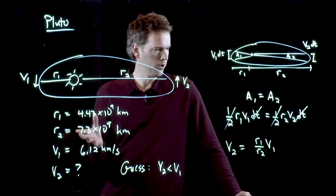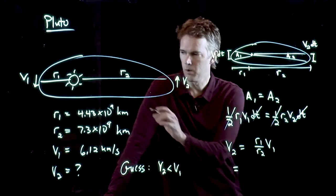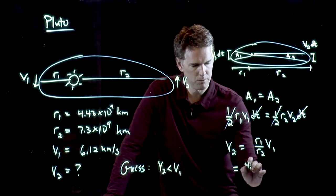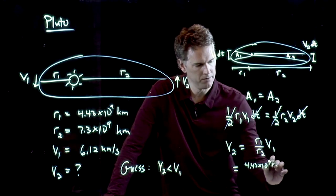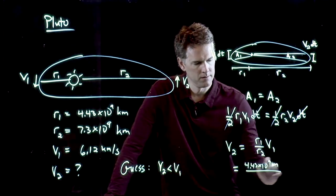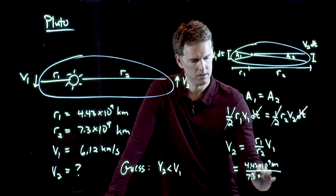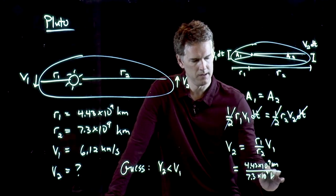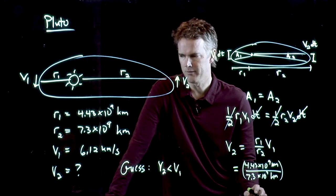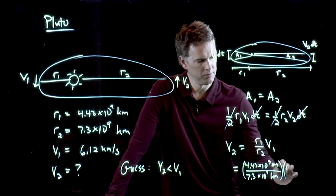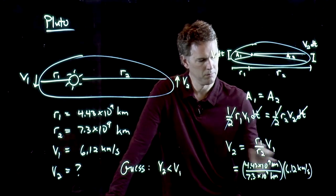And now we have all those numbers. So we can plug it in and try it. R1 is 4.43 times 10 to the 9 kilometers. I'm going to divide by 7.3 times 10 to the 9 kilometers. And I'm going to multiply by V1, which is 6.12 kilometers per second.